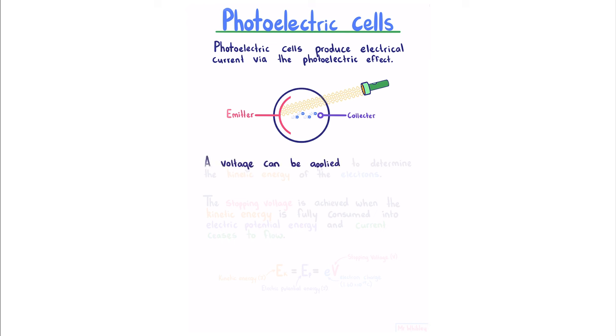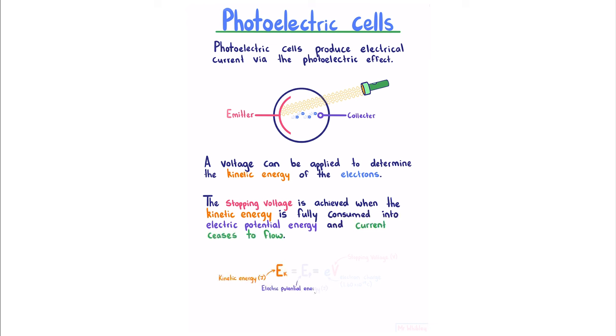A voltage can be applied to determine the kinetic energy of the electrons. The stopping voltage is achieved when the kinetic energy is fully consumed into electric potential energy and current ceases to flow. This kinetic energy, equal to our electric potential energy, is equal to our electron charge multiplied by our stopping voltage.